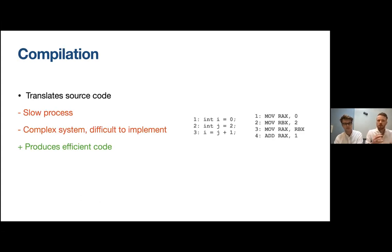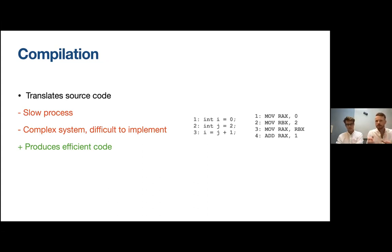Compilation, on the other hand, is the process of translating code in one language into another. In the example here we have translated or compiled this code into native code which can be run directly on the processor. Even though this compiled code has more lines, each instruction can be executed directly on the processor and therefore performance is much higher. The problem with compilation is that it can be quite a complex process, and the compiler can involve very complex systems, making it hard to understand and implement.